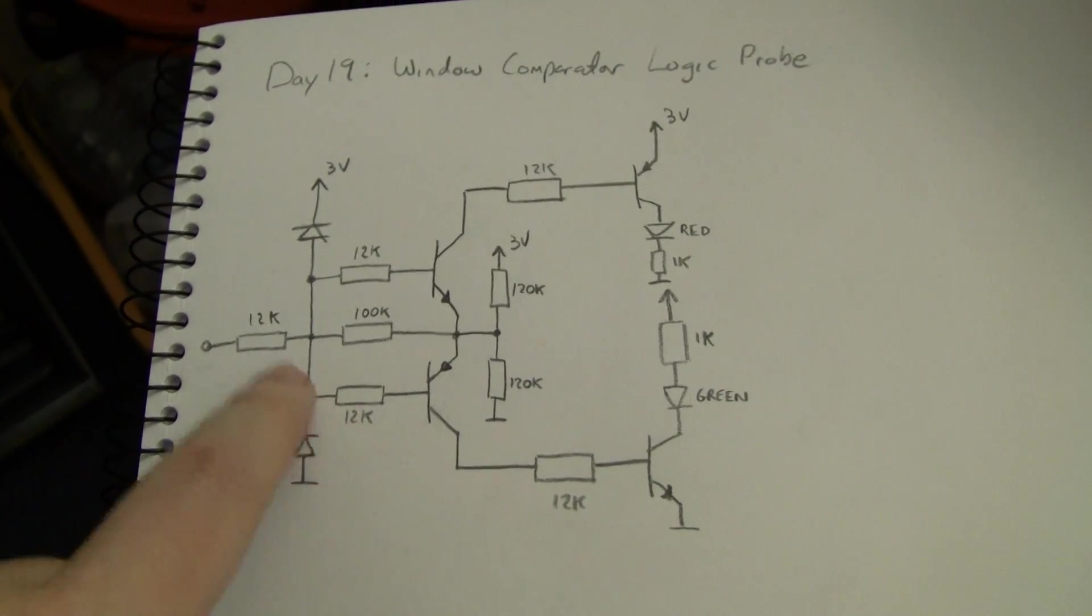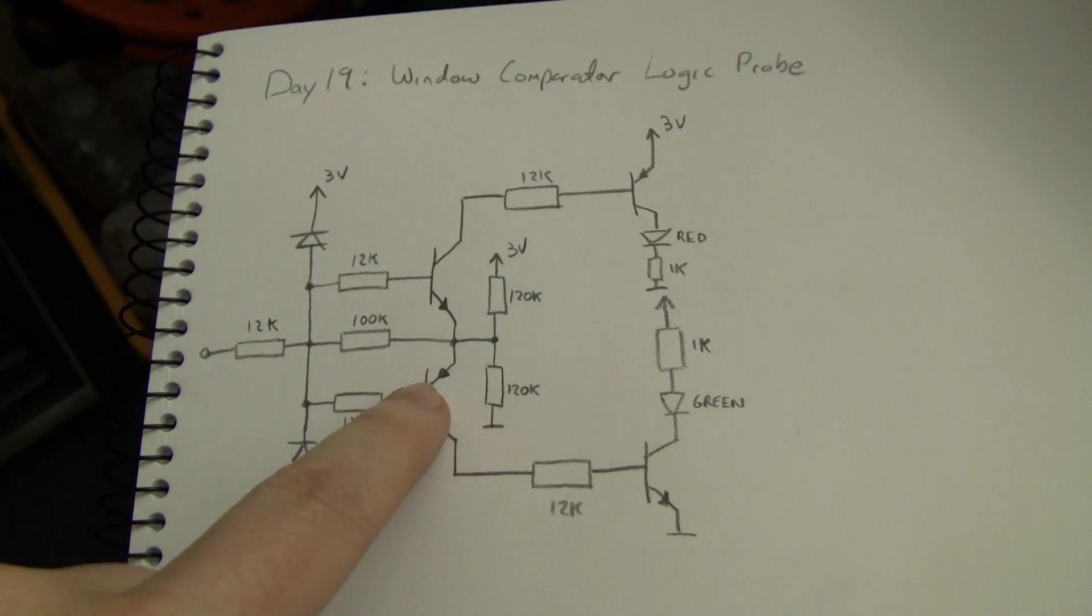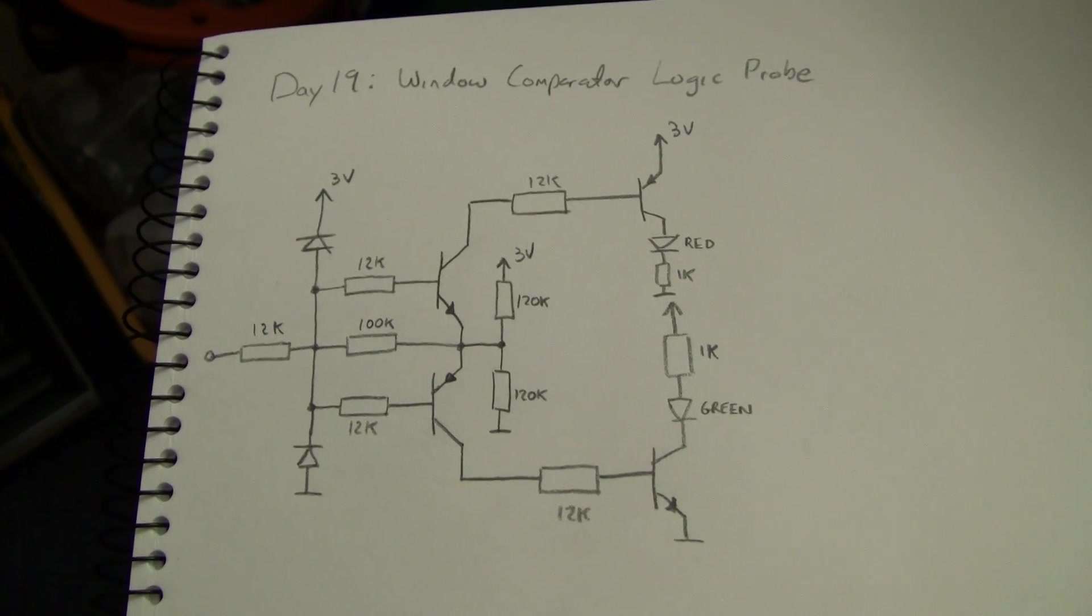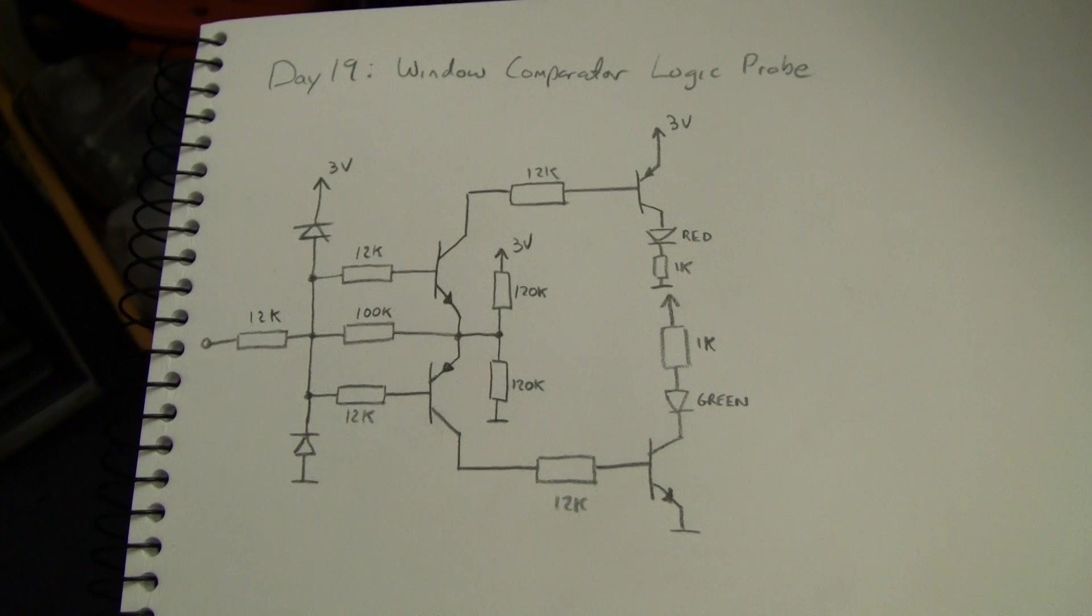Similarly for the other half of the circuit, when the voltage drops below this base emitter drop, turns on the PNP, turns on this NPN, turns on the green LED. Very, very simple.